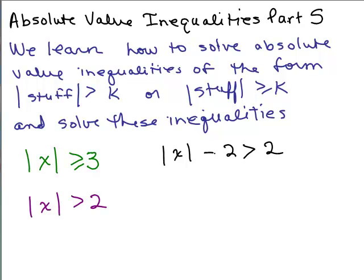This is part five of absolute value inequalities, and finally we're going to learn how to solve absolute value inequalities that have greater than or greater than or equal to problems — something in the form where the absolute value of some stuff is greater than some positive number. We want K to be a positive number, and on this video we solve the following three absolute value inequalities.